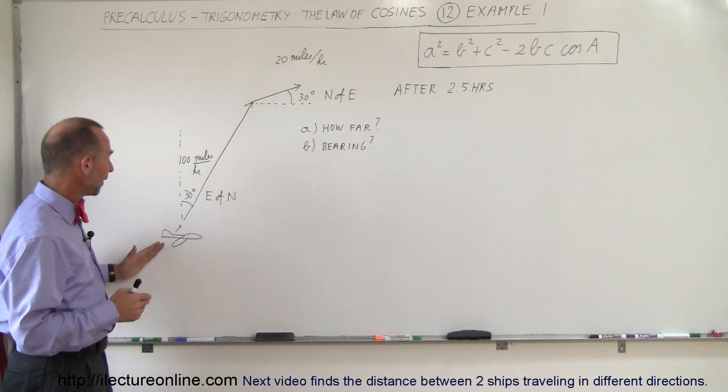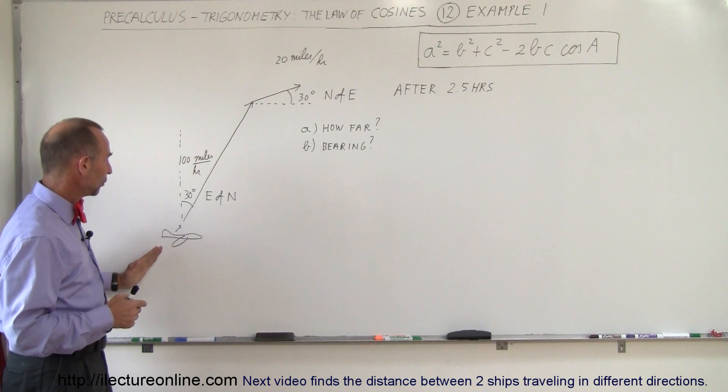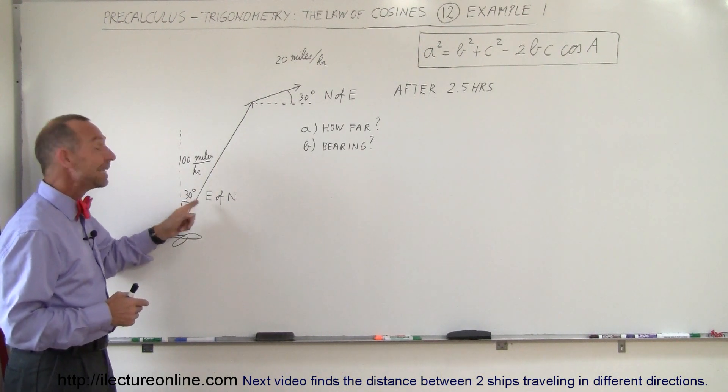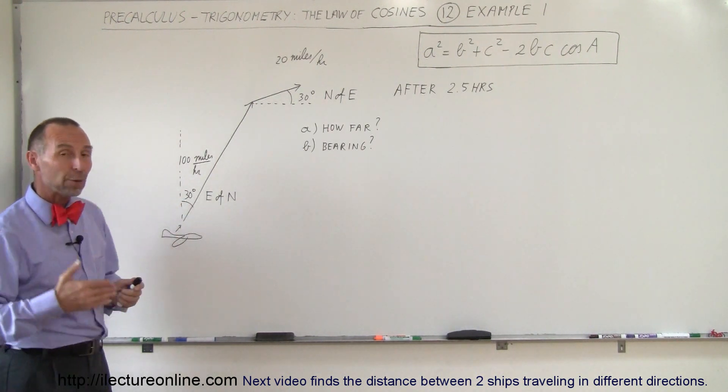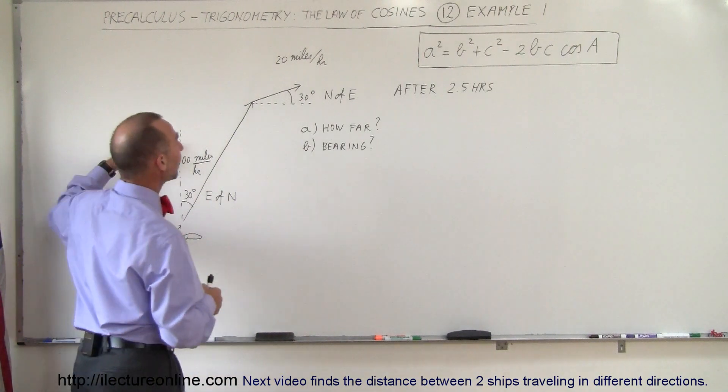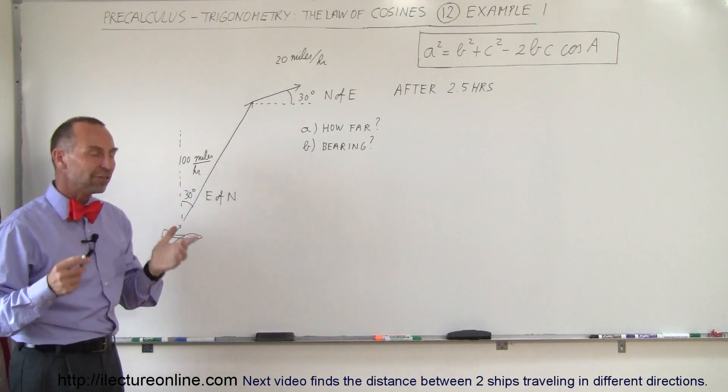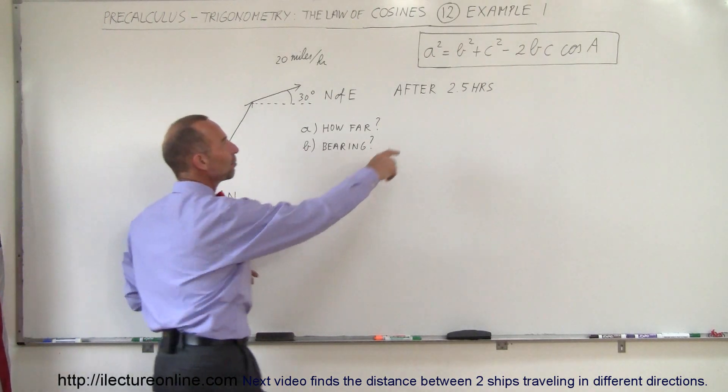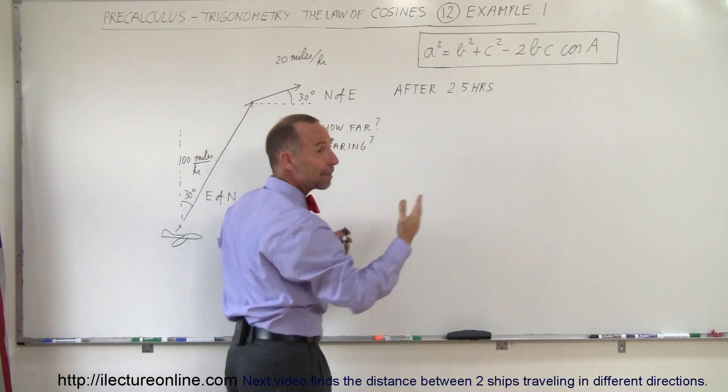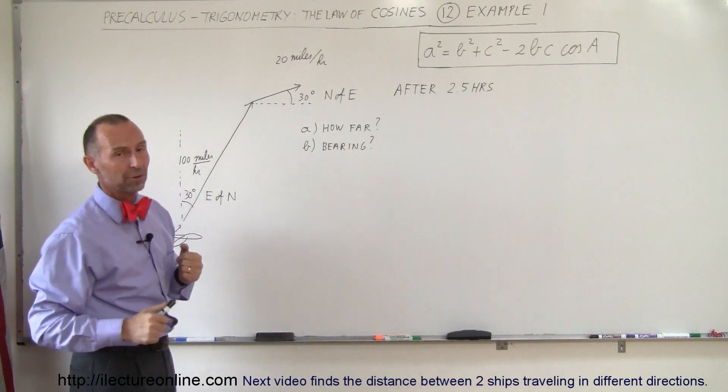Let's say we have an airplane that's flying at 100 miles per hour in a direction 30 degrees east of north, but there is a wind blowing at an angle of 30 degrees north of east at 20 miles per hour. So eventually where will this plane end up if the plane keeps flying and the wind keeps blowing at the same speed in the same direction for two and a half hours?